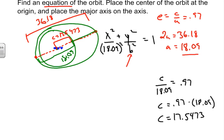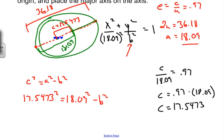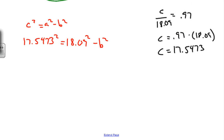Well we know that c squared equals a squared minus b squared. So using the information that we have, we can find b squared by taking 17.5473, we're going to square that, and take 18.09 and we're going to square that and minus b squared. From here, we're going to square that and that's going to give us 307.9077.